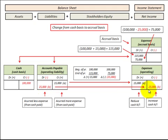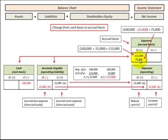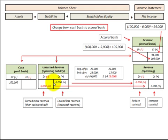In the case where our accounts payable decreases by twenty-five thousand dollars for the year, we'd have a reduction in our expenses of twenty-five thousand dollars. We subtract that reduction from the hundred thousand dollars of cash paid, so our expenses on the accrual basis would be seventy-five thousand dollars.